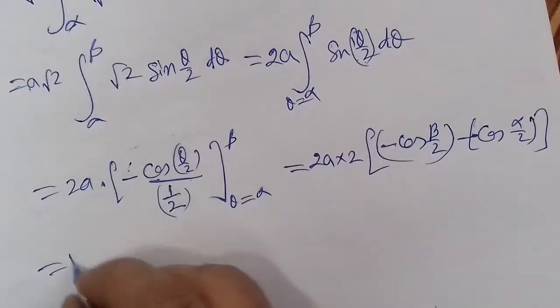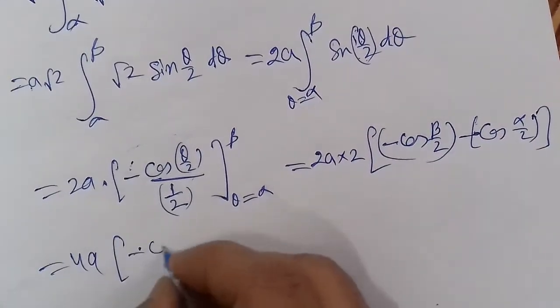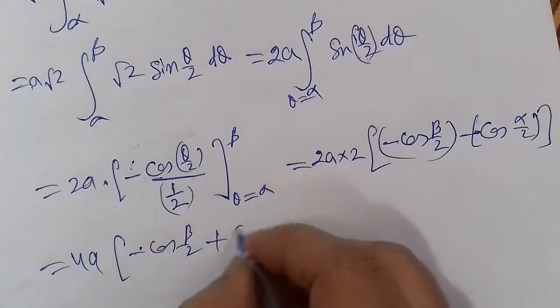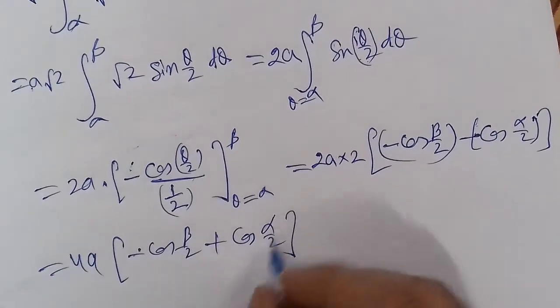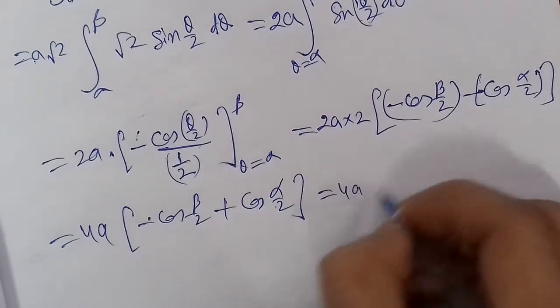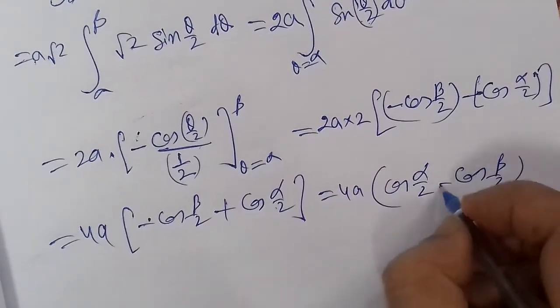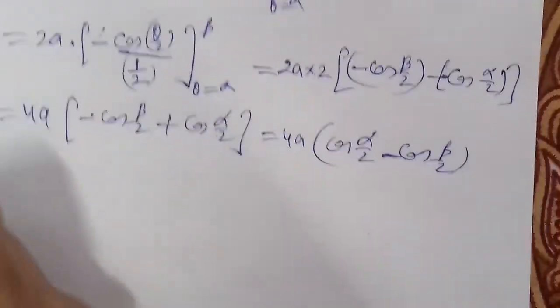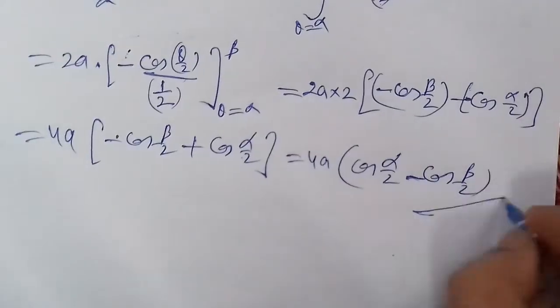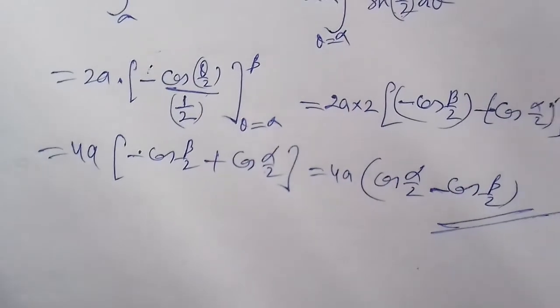When we open this bracket, minus minus becomes plus: = 4a[cos(α/2) - cos(β/2)]. This is the result obtained. Thank you very much for listening. Alhamdulillahi Rabbil Alameen.